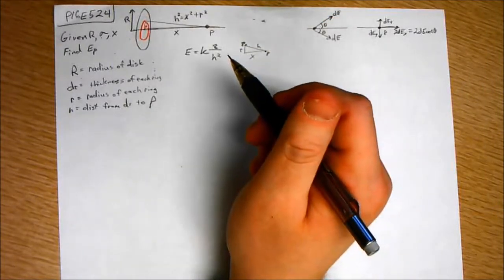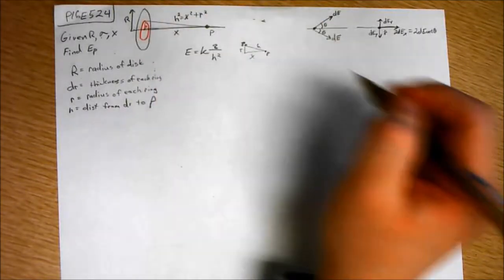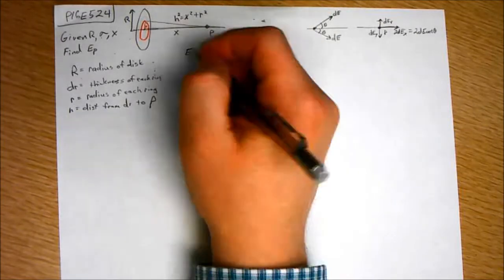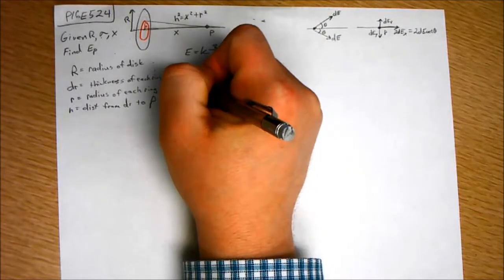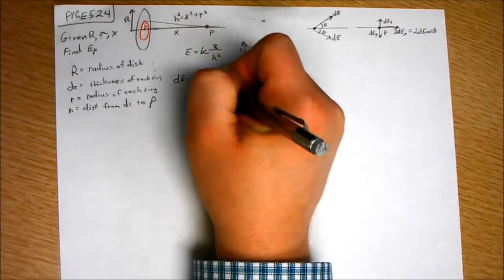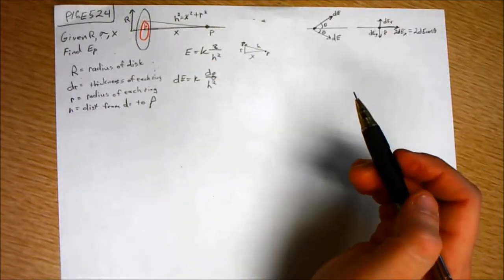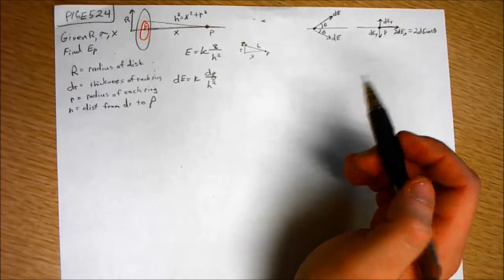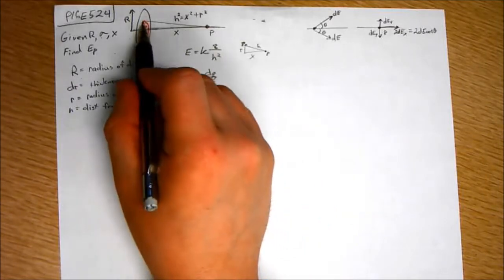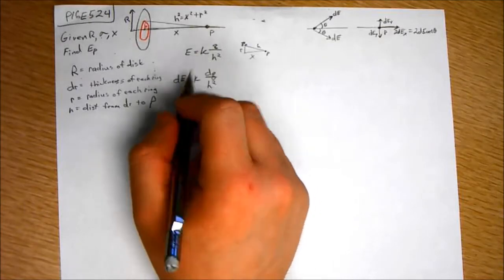Of course, we do not have a point charge. We have a distribution of point charges. So, what we're going to have to do is put this in differential terms of DE equals K DQ over H squared. I'm leaving off the unit vectors for now. I can add it at the end. This means that every differential charge element DQ along here creates this electric field DE.